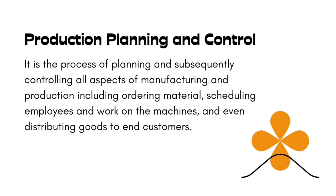So what is production planning and control? It is the process of planning and subsequently controlling — no big deal — it is the planning and controlling of all aspects of manufacturing and production. This includes ordering your materials, scheduling employees and work on the machines, and even distributing the goods to end customers. So it is the end-to-end, A to Z of manufacturing. Production planning and control is a necessary function for any organization seeking to maintain a competitive advantage in the market.